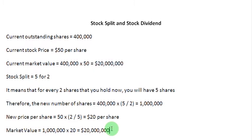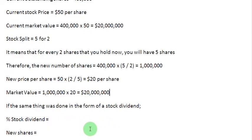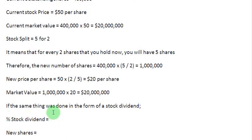Now if the same thing was to be accomplished through a stock dividend — the difference between the stock split and stock dividend is that a stock split is always stated in the form of a ratio, whereas a stock dividend is basically the same information but stated in a different format, that is in the format of a percentage. So let us translate this 5 for 2 stock split into percentage terms, and when we do that we will have the percentage stock dividend.